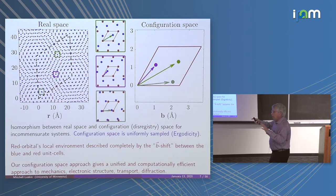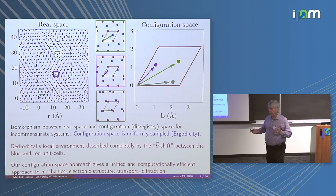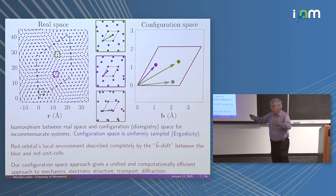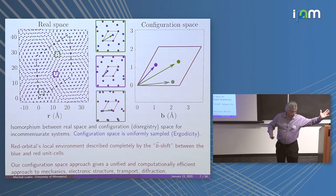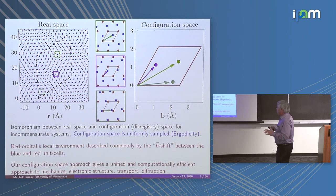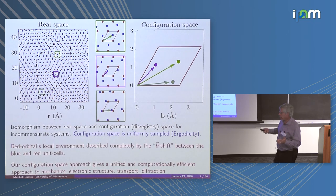We can't honestly do that in an incommensurate system. You could try to fake it by straining one material, so you're no longer in a ground state. When I first entered the field, the papers I found had people straining one layer, getting a small supercell, and handing it over to their band structure solver. This notion of configuration space lets us approach incommensurate systems without approximation — without straining a material or anything.